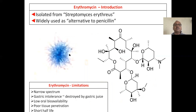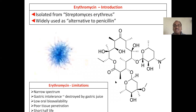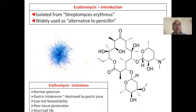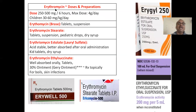Erythromycin is isolated from the organism Streptomyces erythreus and is widely used as an alternative to penicillin. It has various limitations: it is a narrow-spectrum antibiotic (mainly effective against gram-positive organisms, very less against gram-negative), it has gastric intolerance and is destroyed by gastric juice, giving it low oral bioavailability, poor tissue penetration, and a short half-life requiring frequent dosing.